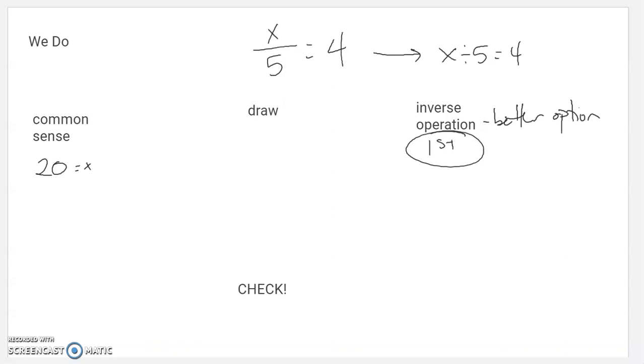The drawing option is pretty clumsy. I like to have ways for you to think about it because maybe it helps. But I think this one's the much better option here. So X divided by 5 equals 4. Remember how I think about this. Look at my variable. What's happening to it? It's being divided by 5.